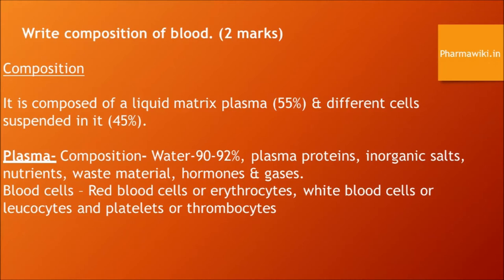The next question relates to the diagram of the lymph node. You can see the diagram. There is areolar tissue, capsule, lymphatic tissue, afferent lymphatics, and efferent lymphatics at the hilum of the node.